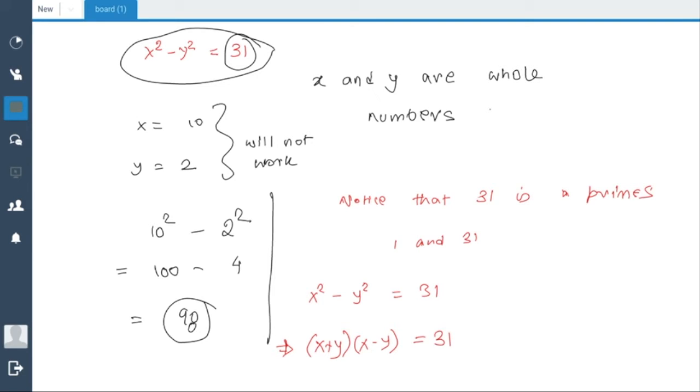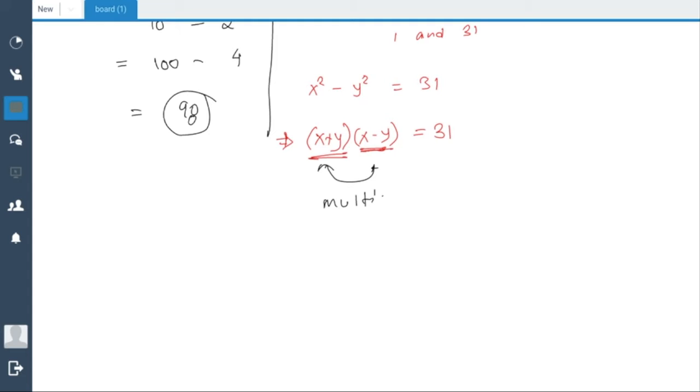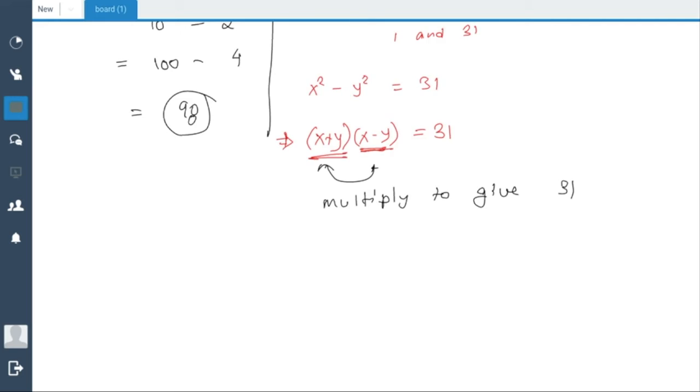Now (x + y) times (x - y) is 31, which means that both of these numbers, x + y and x - y, are factors of 31. This is a critical part to understand. They multiply to give 31. So each of them must be factors or divisors of 31.